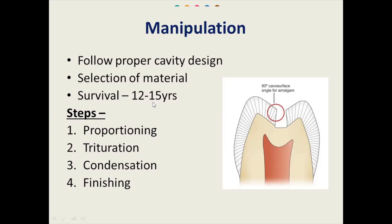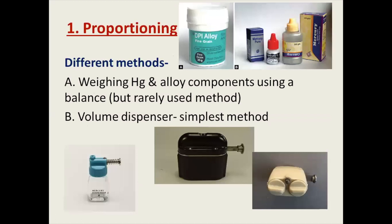The first step is proportioning. There are different methods to take mercury and alloy powder. You can do weighing using a balance, but it is rarely used. The most simple and commonly used method is a volume dispenser, which has two compartments — one containing alloy powder and one containing mercury. When you press the piston, both are collected in your mortar for mixing.